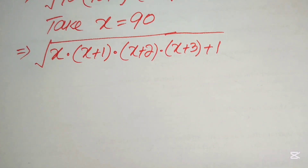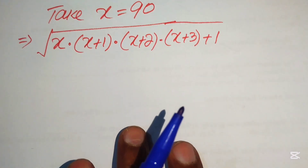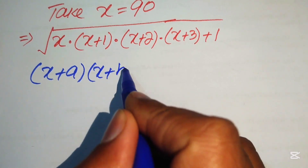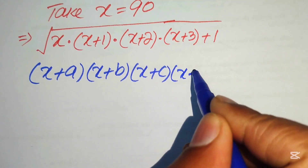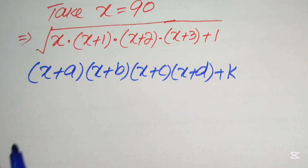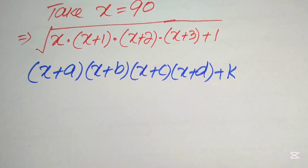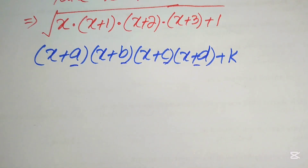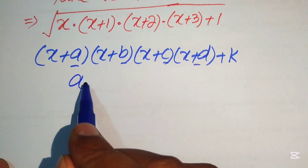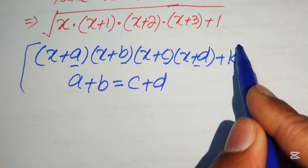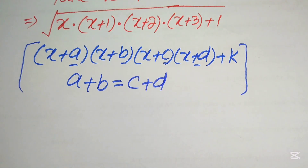Here we have a very important factor we can apply to rearrange all of these factors. If you have some factors multiplied in the form (x+a)(x+b)(x+c)(x+d) plus k, the key is to check that when you add any two of the constants, you get equal sums — that is, a+b equals c+d. This is the very simple fact in order to simplify or multiply all of these factors.